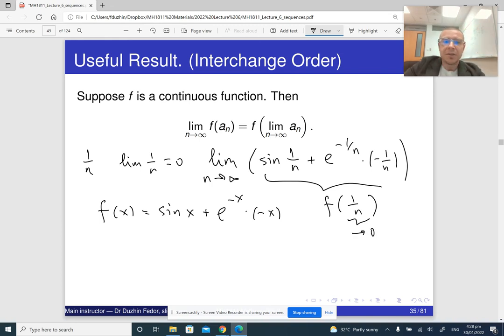So which means that its limit is going to be the following thing. You take whatever is inside f, take its limit, and its limit is zero here. And it approaches f of that number. So what we get is f of zero, which is sine of zero times e to the minus zero times minus zero, which is just zero.